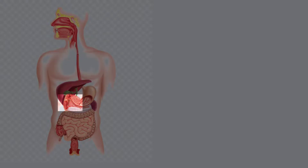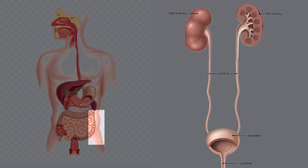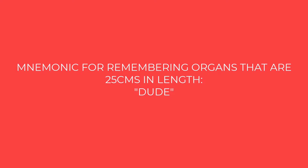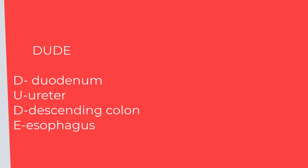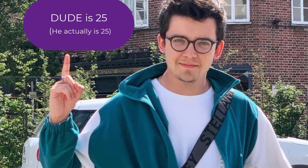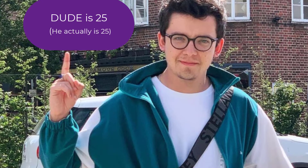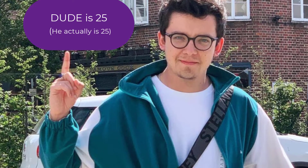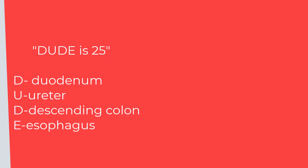To remember these, use the mnemonic DUDE: D for Duodenum, U for Ureter, D for Descending colon, and E for Esophagus. To remember the length, use the phrase 'DUDE is 25' — so all four structures are 25 centimeters in length.